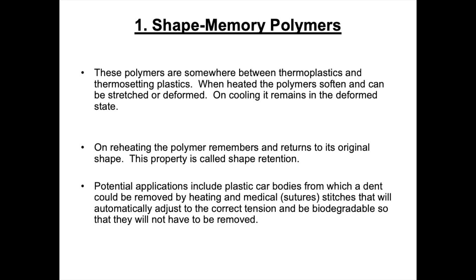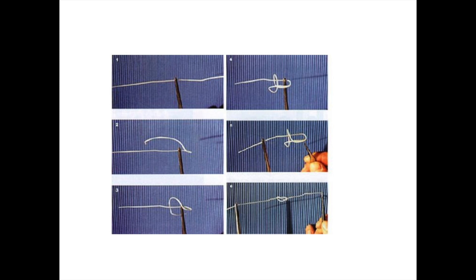Another use of shape memory polymers is in medical sutures. These sutures or stitches automatically adjust to the correct tension because of body temperature. An advantage of these materials is that they're biodegradable and therefore they don't have to be removed. The following picture shows the medical sutures changing their shape, going back to their original shape when they're warmed, and therefore achieving the correct tension needed.